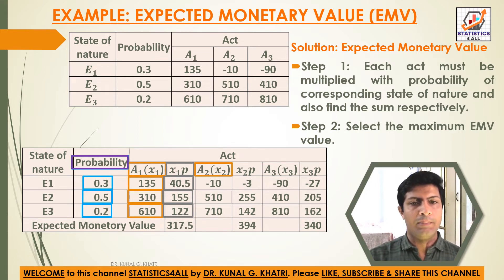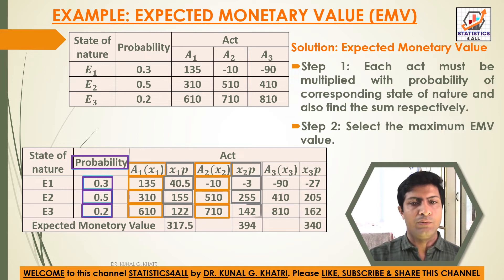For Act 2, apply the same procedure. Act 2 × probability: -10 × 0.3 = -3; 510 × 0.5 = 255; 710 × 0.2 = 142.